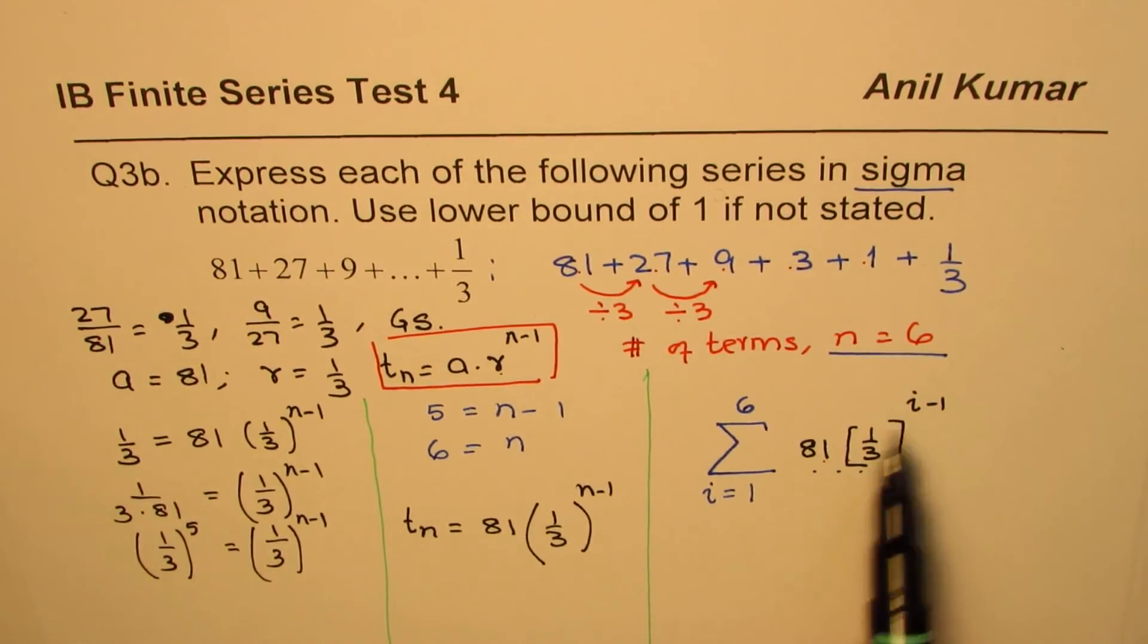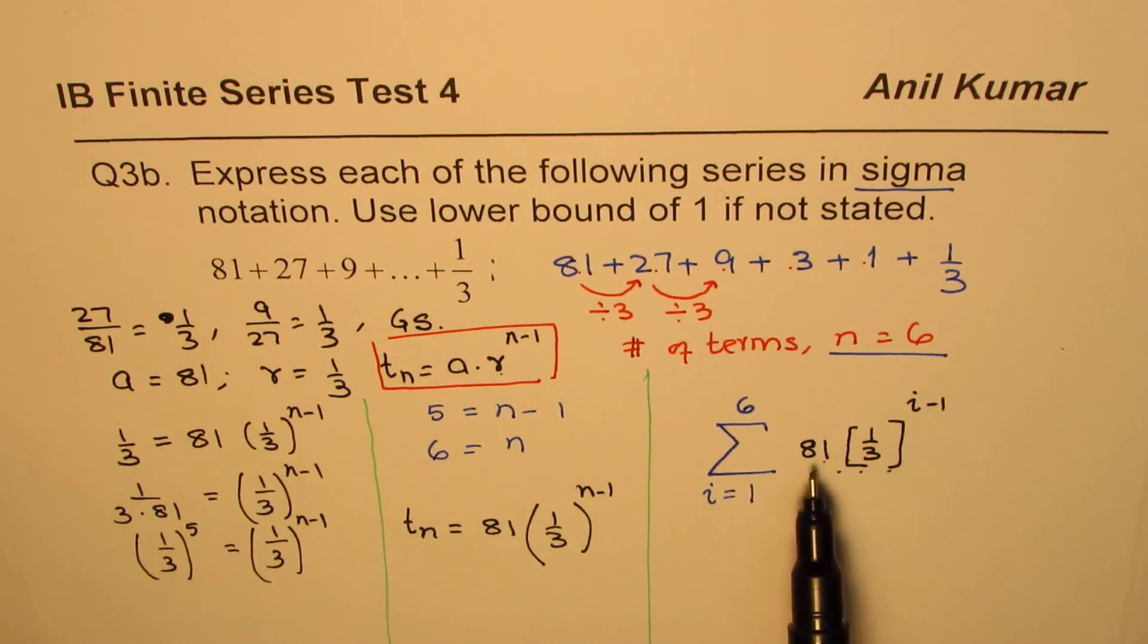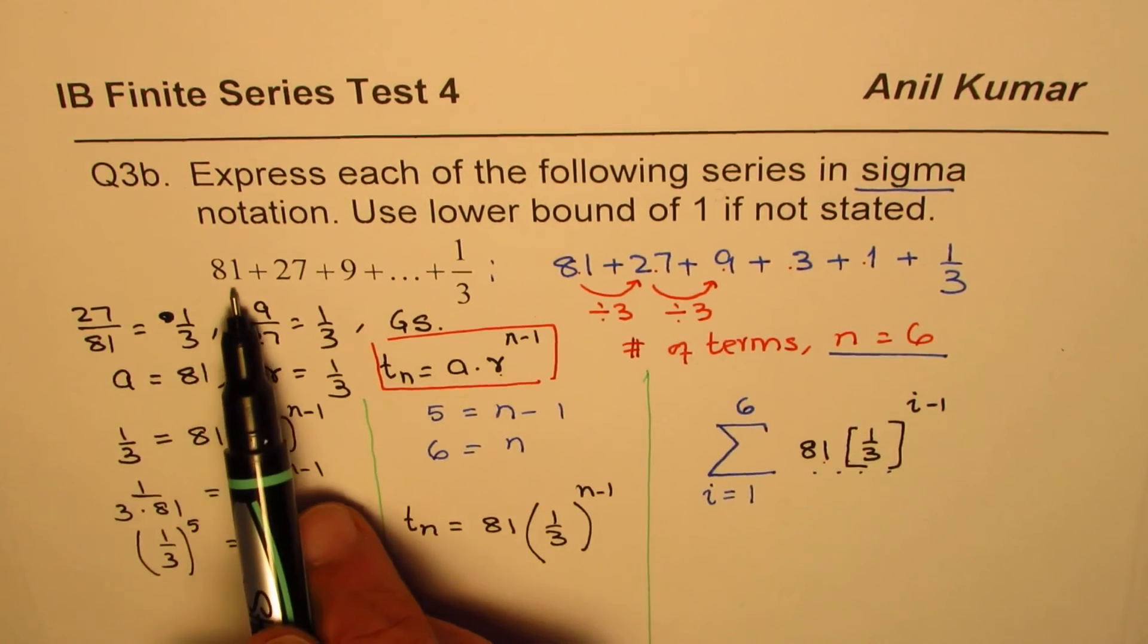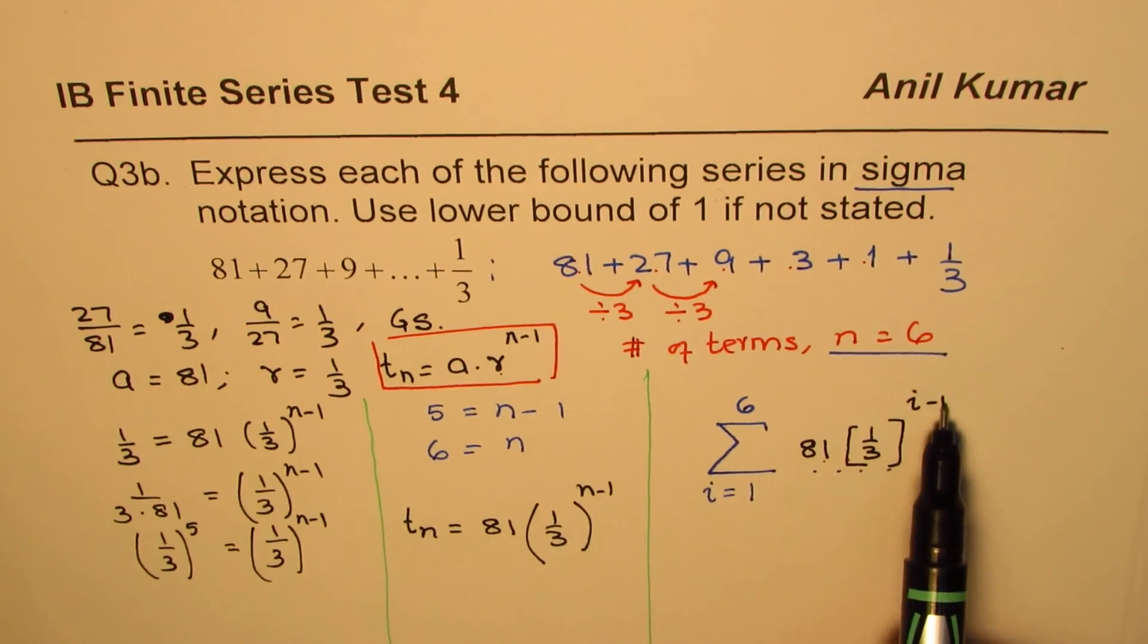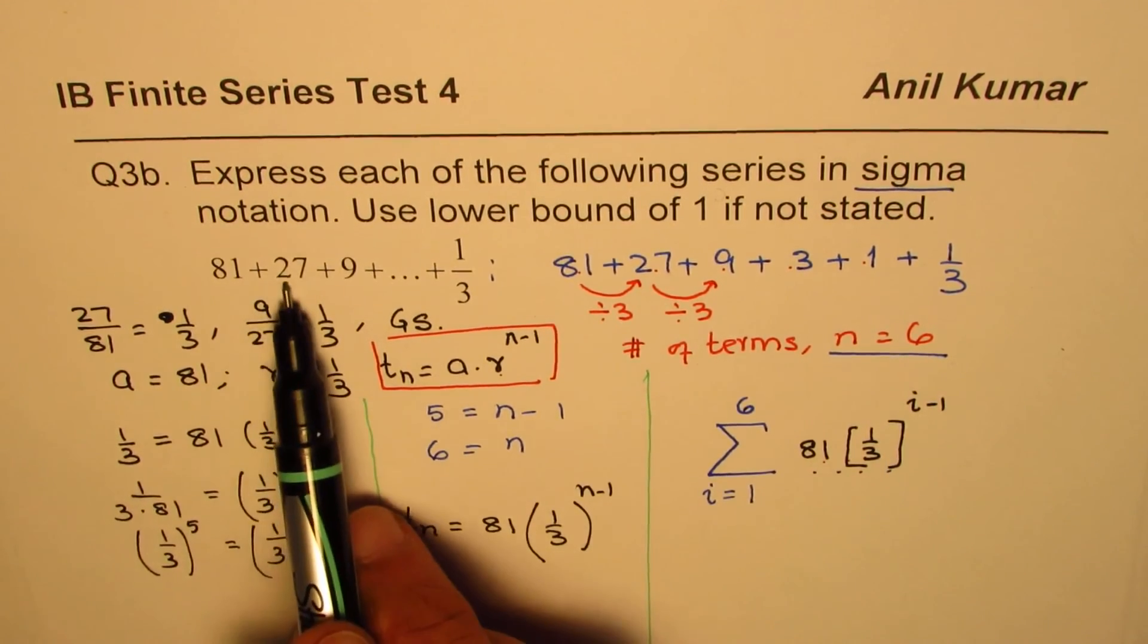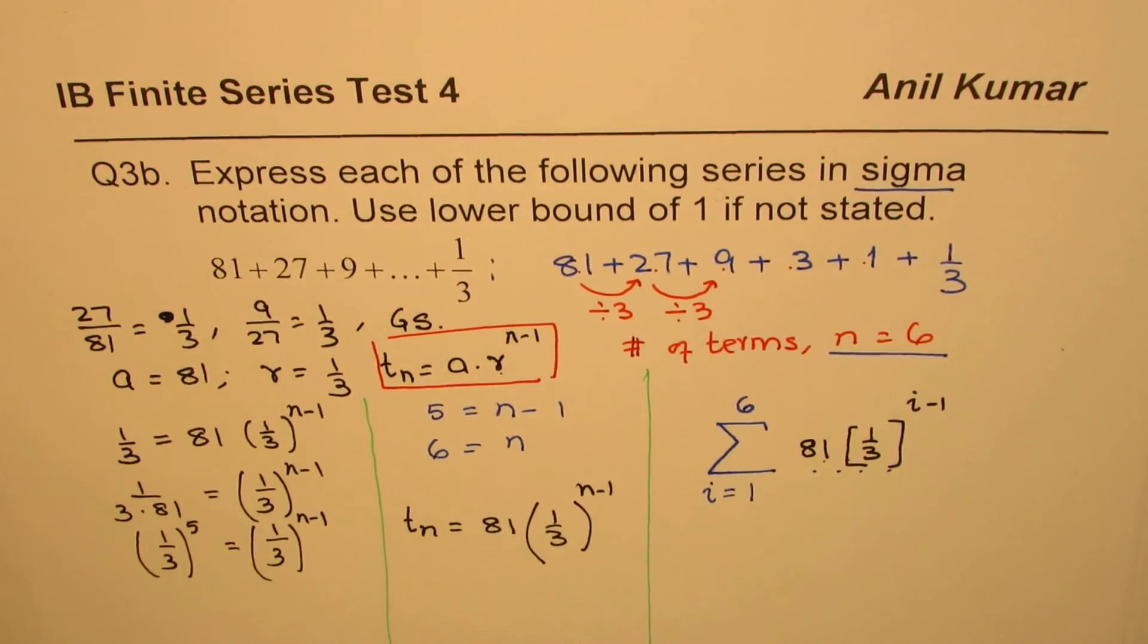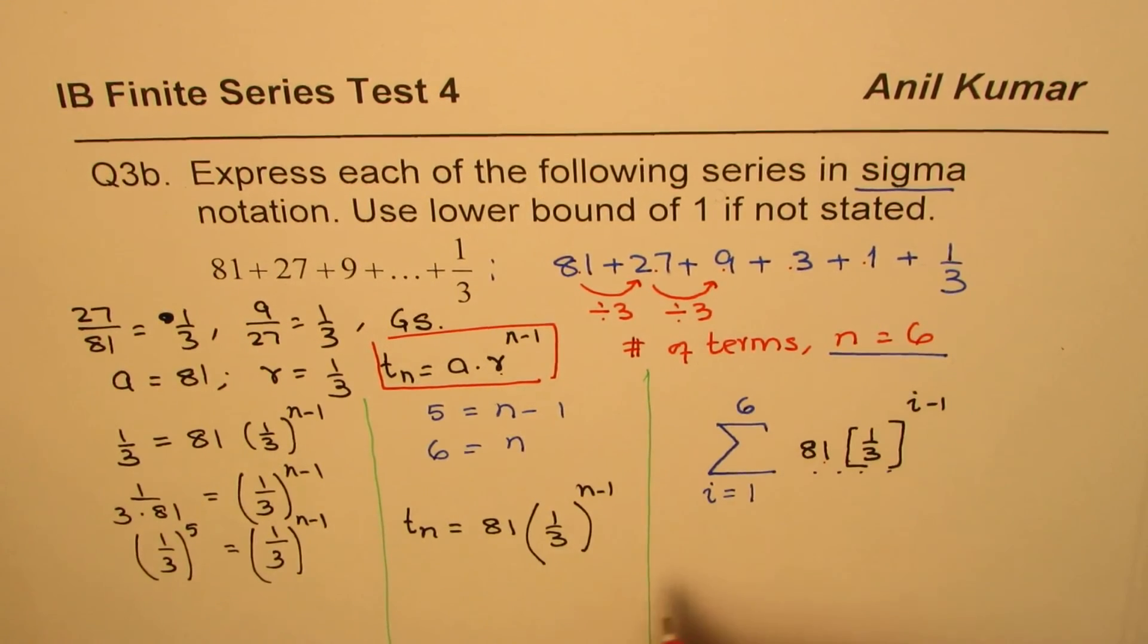So that is how we could actually solve this question. If i equals 1, the power will be 1 minus 1 is 0, so we'll get 81. If i is 2, then 2 minus 1 is 1, 81 times 1 over 3, which is 27. So that is how you can check your result also.